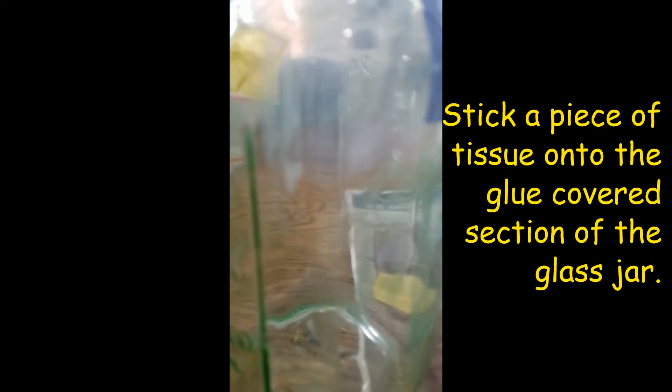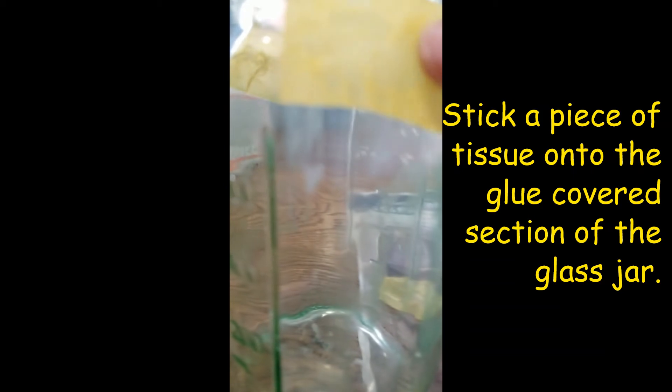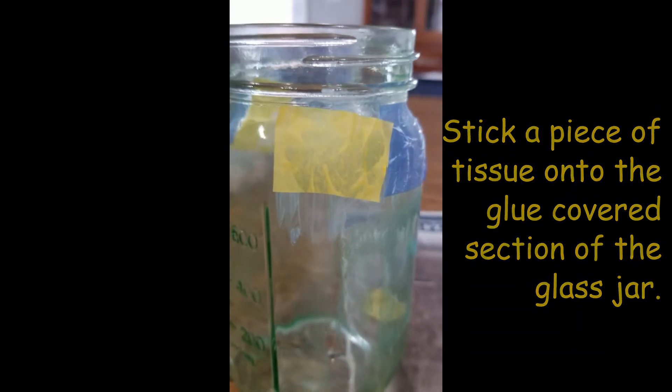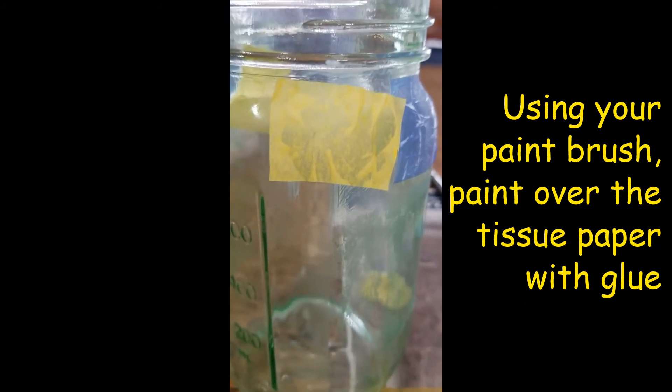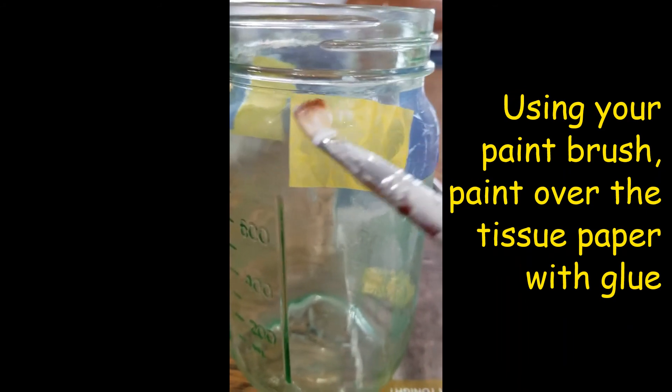Once you get your glue on your jar you're going to add a piece of tissue paper sticking it on the jar. Once that piece is stuck on there you're going to re-dip your brush into the glue and you're going to go back over top of your piece of tissue making sure you get all the sides.